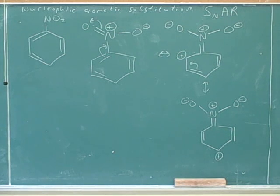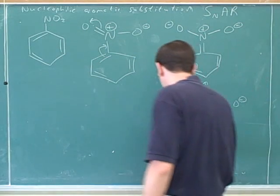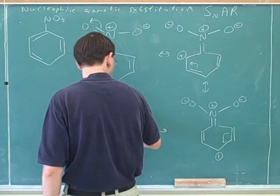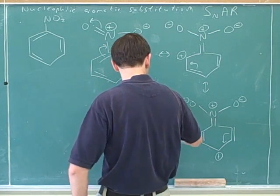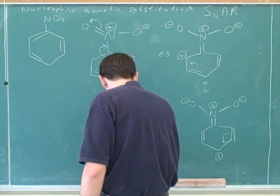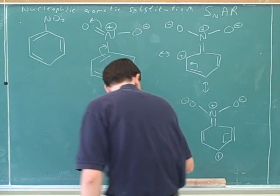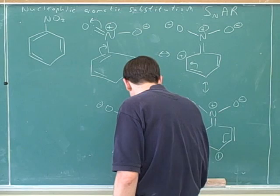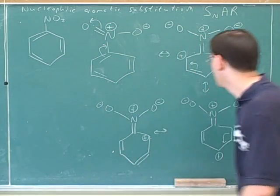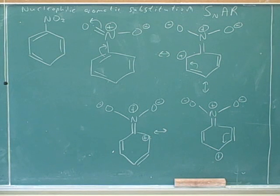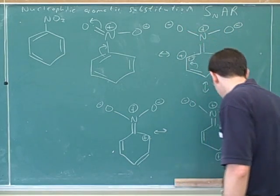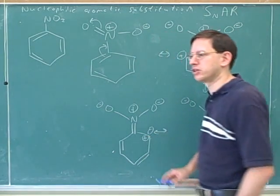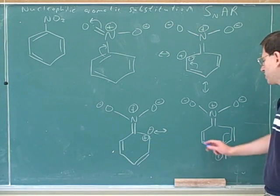Don't forget to use that electron pushing arrow to show how you've got one picture to another. So which positions have been activated, ortho, para, or meta here? Ortho and para. This is the ortho position. This is the para position. And this is the other ortho position over here. But there isn't any resonance structure where there's a positive charge on the meta positions.